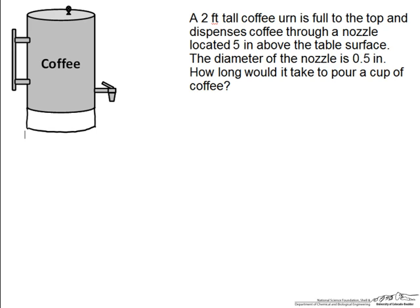The first thing we want to do in any problem is label our points of interest. If it is full to the top we will call that our point one and where it dispenses our point two.